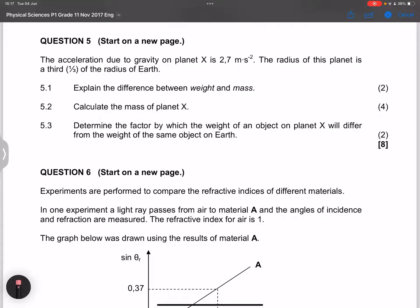So let's go to the next question. They say to us, calculate the mass of planet X. Now what we need to do, ladies and gents, remember they said to us that the radius of planet X is a third of the radius of the Earth.